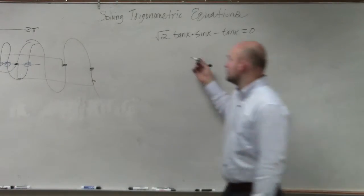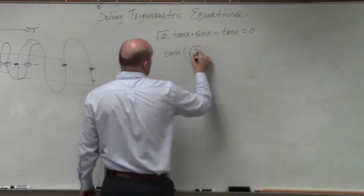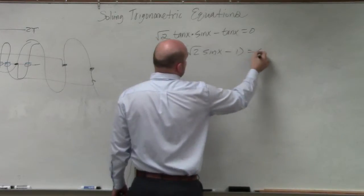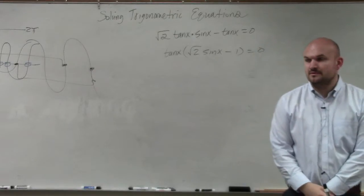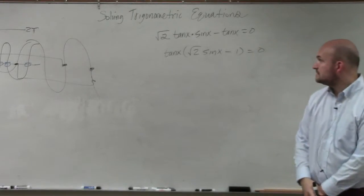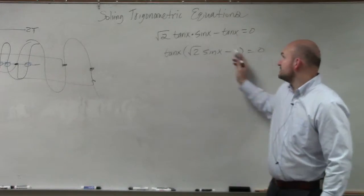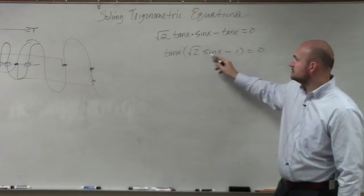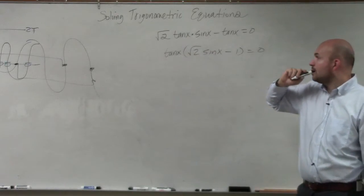Tangent of x. Tangent. So I can factor out a tangent of x, and I'm left with the square root of 2 times sine of x minus 1 equals 0. Follow me. Tangent times negative 1 is negative tangent of x. Tangent times square root of 2 sine of x is square root of 2 tangent of sine x. OK.